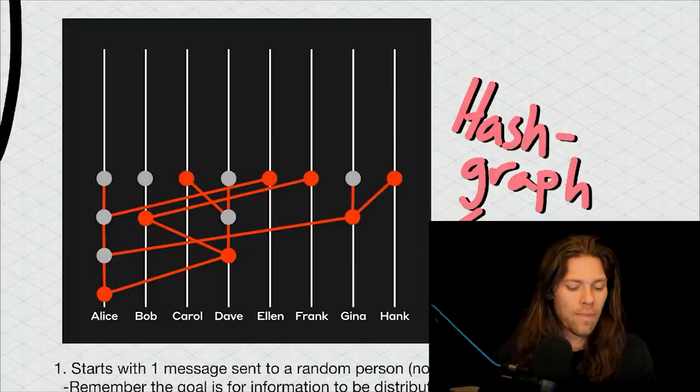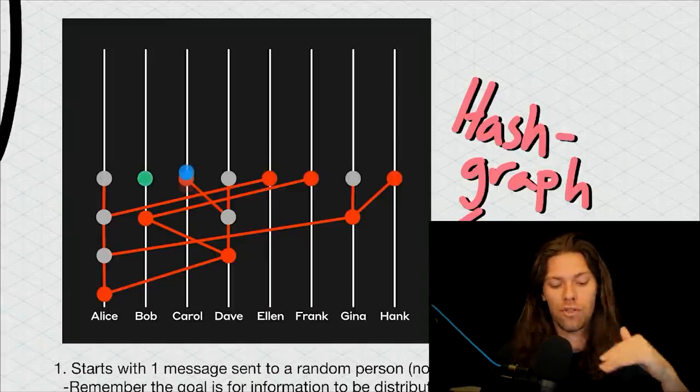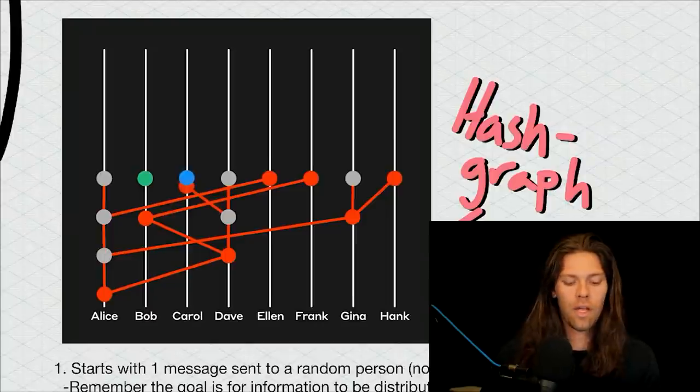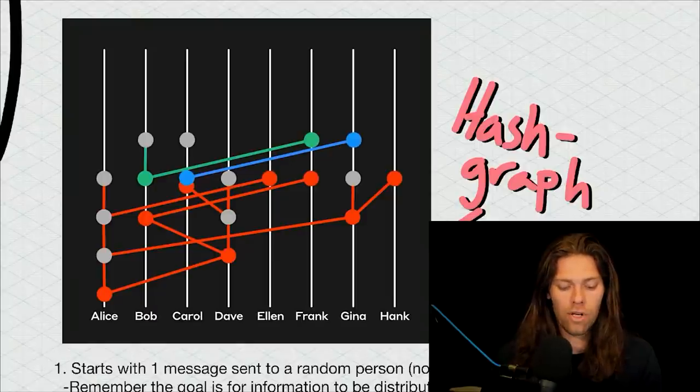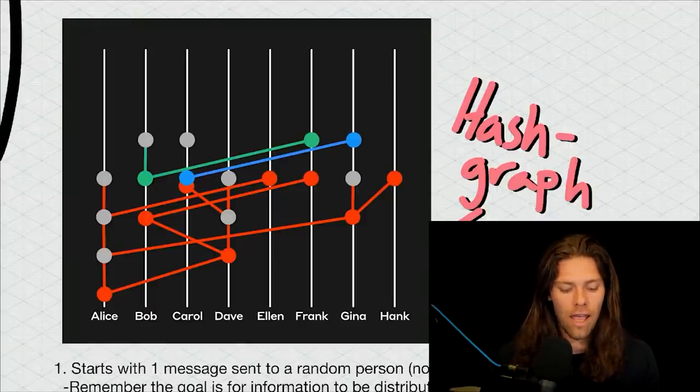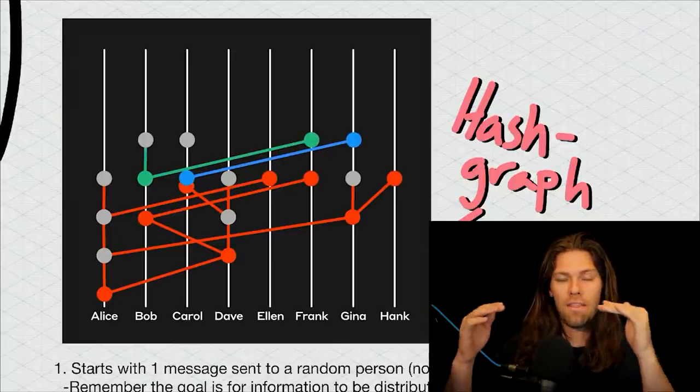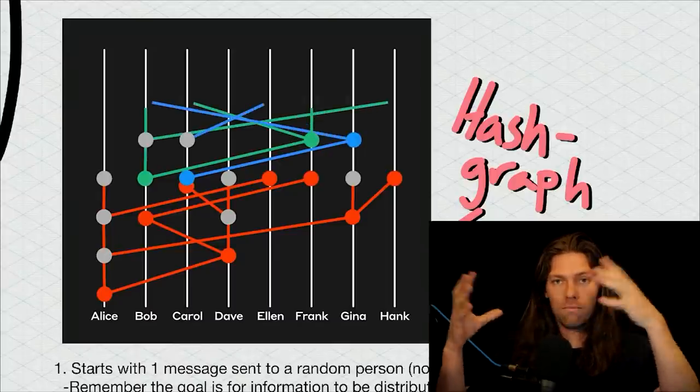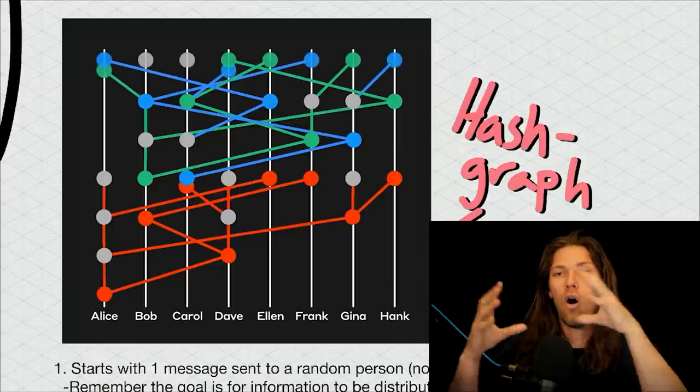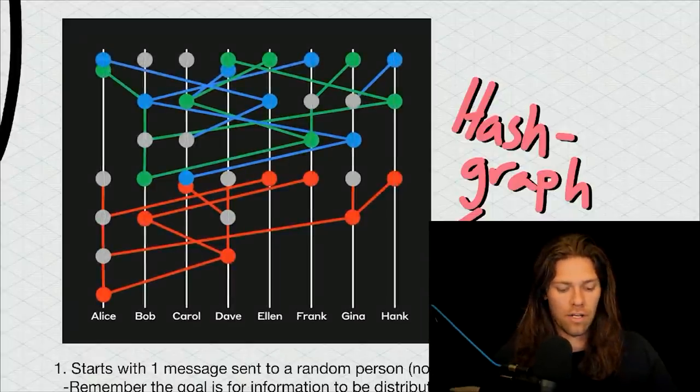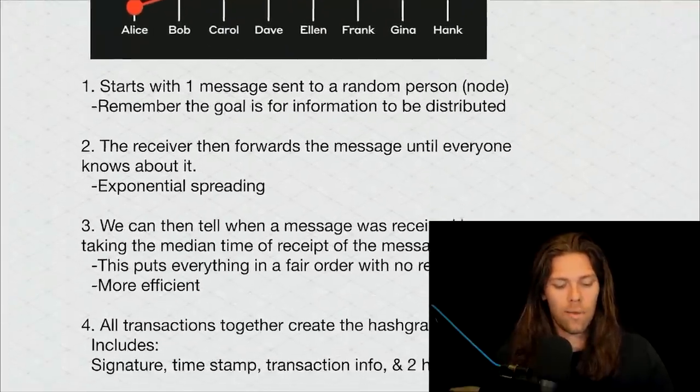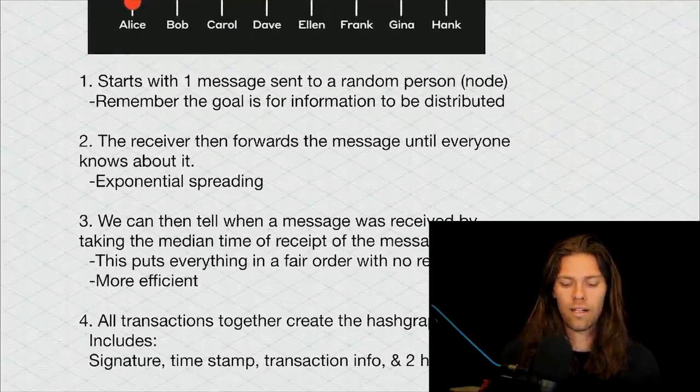It's like this chaos where there's random action, but it actually makes the system more efficient, which is really interesting. So we can see as time passes, we just have that one transaction from Alice as we're going up. Then we have some new messages or new transactions from Bob and Carol. They have their message or transaction, they send that randomly. You can see Carol's transaction gets sent randomly to Gina and Bob's gets sent randomly to Frank. Then those people send it randomly to other individuals.